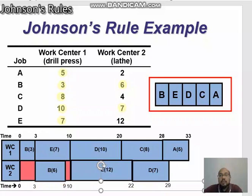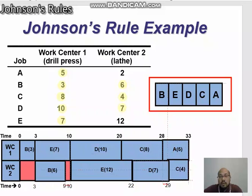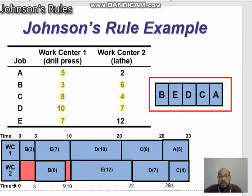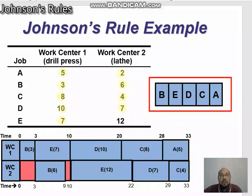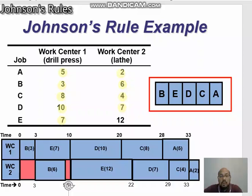After job D is job C — 4 hours at work center two. So 29 plus 4 equals 33 hours. The last job is A — 2 hours at work center two.